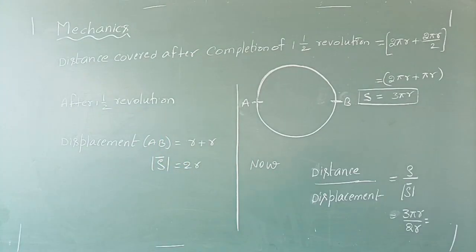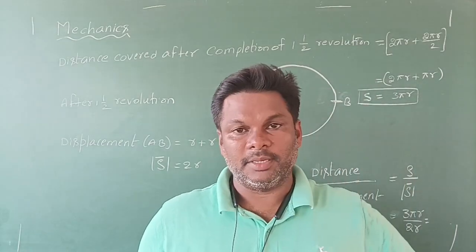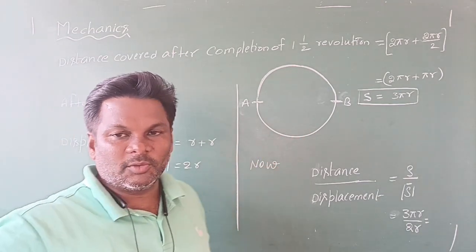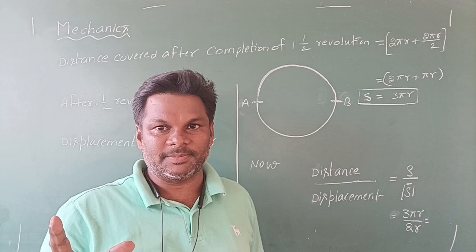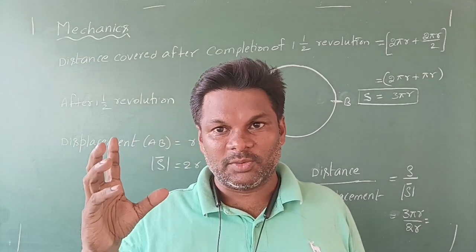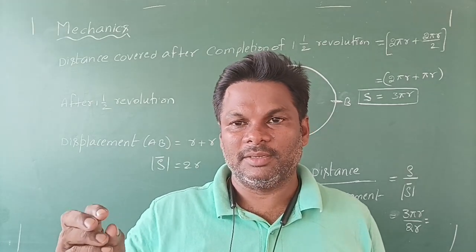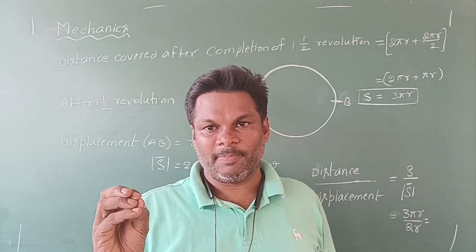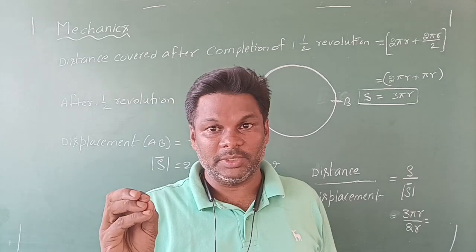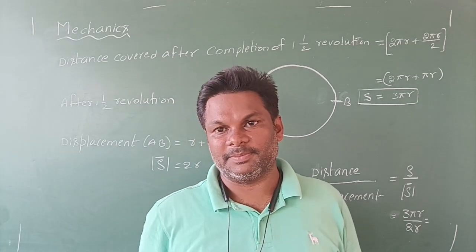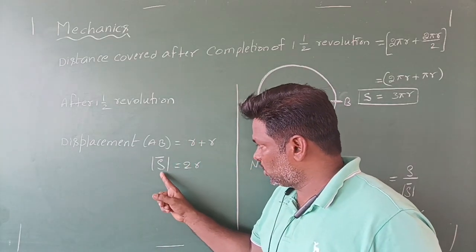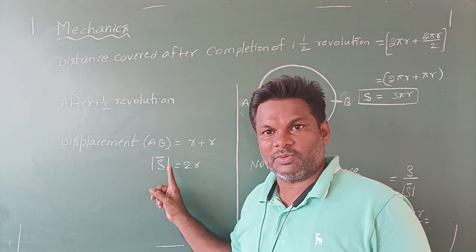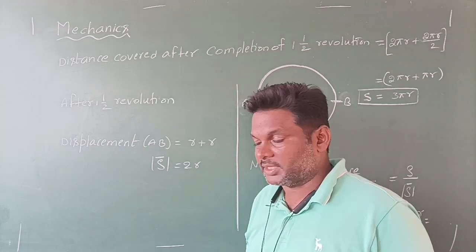This is our second problem. A body moves along a circular track, and after completion of one and a half revolutions, what is the ratio between distance and displacement? You all need to know that distance is a scalar quantity and displacement is a vector quantity. Distance always has its magnitude, whereas for displacement you measure the magnitude, denoted as |s̄|.